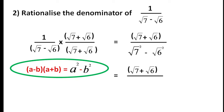The numerator is root 7 plus root 6. In the denominator, root 7 squared is 7 and root 6 squared is 6, because a radical sign times itself equals the number. Root 7 into root 7 is 7, and root 6 into root 6 is 6. So the denominator is 7 minus 6, which equals 1.